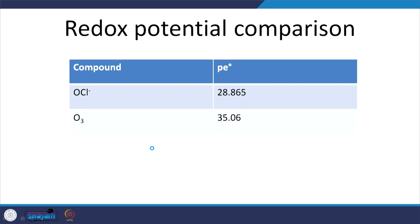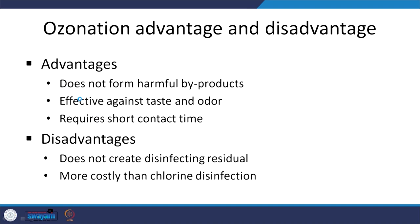To understand how strong ozone is compared to OCl minus, we look at Pe naught (standard conditions). Pe values of 28 for ozone versus 35 — the difference of 7 on a logarithmic scale shows how much stronger ozone is compared to OCl minus. Advantages of ozone: in general it does not form harmful DBPs, it is very effective against taste and odor causing compounds, and due to its fast kinetics and relatively high oxidation potential you need less contact time. However, it does not create a disinfecting residual because it degrades quickly in water.